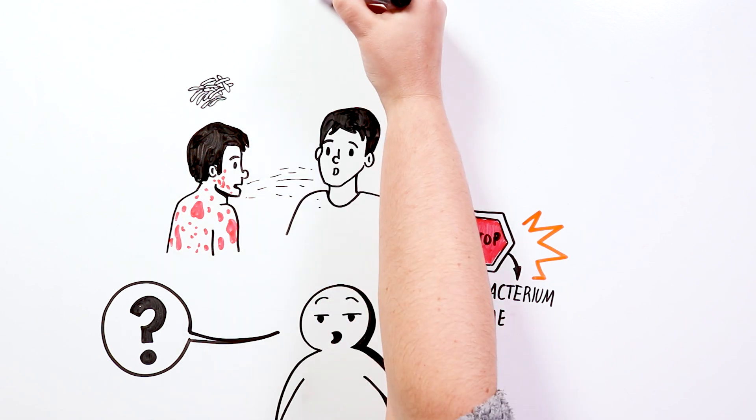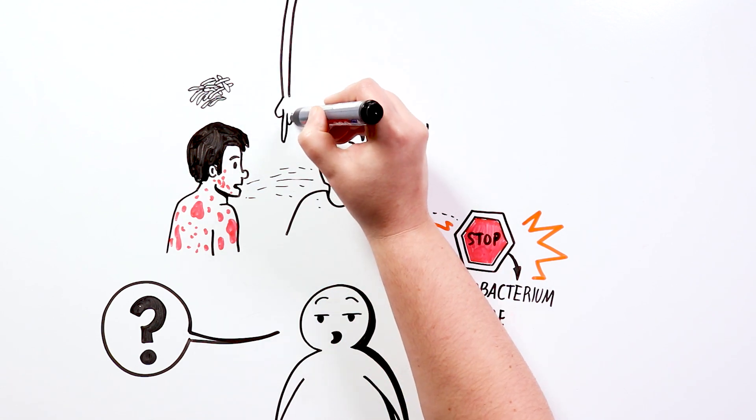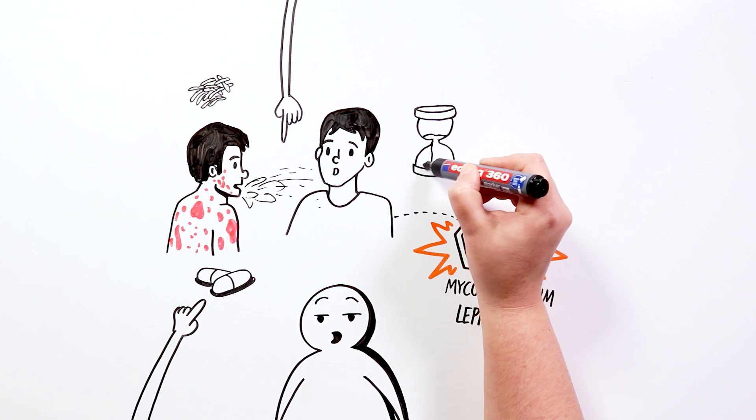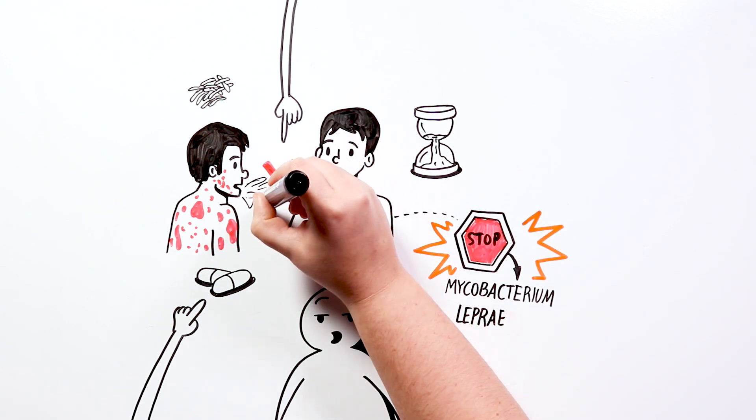Transmission occurs by inhaling the small droplets released into the air when someone with leprosy coughs or sneezes. If medication is administered to the patient, after a few months of treatment, he would stop infecting others.